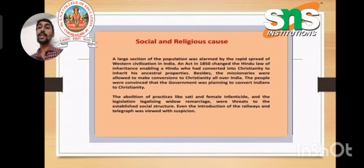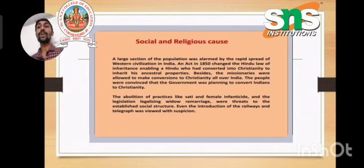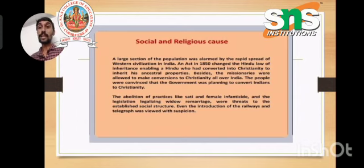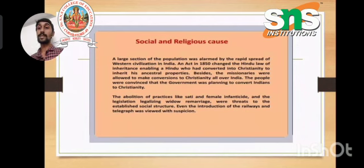The social and religious causes of the 1857 revolt were that the British had abandoned their policy of non-interference in the social and religious life of Indians. This included the Abolition of Sati in 1829, the Hindu Widows' Remarriage Act of 1856, and Christian missionaries being allowed to enter India and carry on their mission activities.